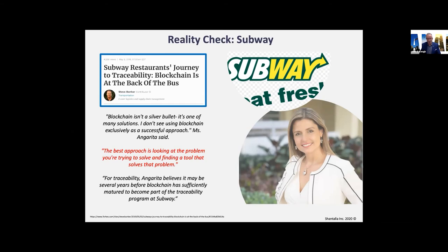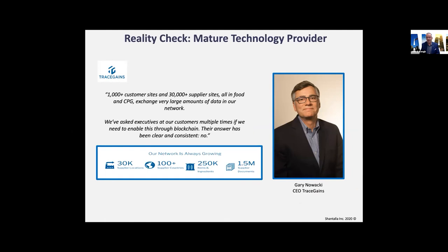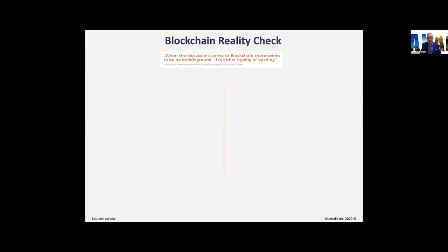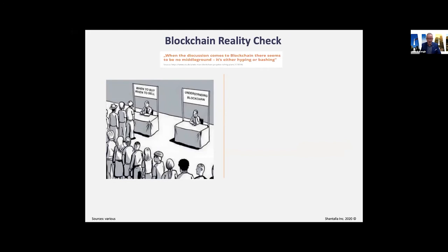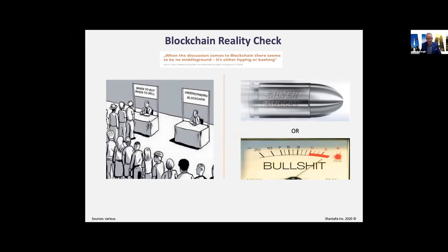Gary has 30,000 suppliers supplying about 1,000 large companies including a lot of food service, and his customers are regularly saying they don't need blockchain — they have a centralized platform. Blockchain reality check: there seems to be no middle ground — it's either hyping or bashing. There's a lot of focus on crypto but not much on understanding how blockchain actually works. Some say it's a silver bullet; others say their 'bullshit meter' is in the red.